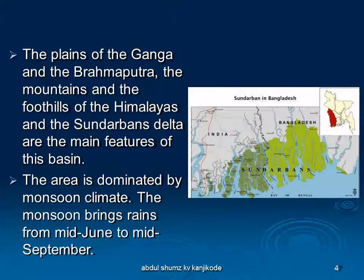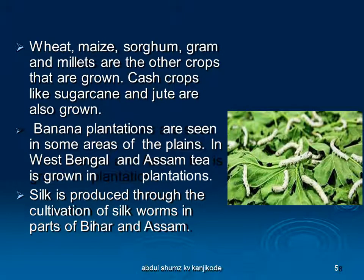The area is dominated by monsoon climate. The monsoon brings rain from mid-June to mid-September. Talking about the topography, the mountain areas have steep slopes and are not suitable for growing crops or settlement. The plains, however, are densely populated because they are good for cultivation — there is fertile soil and it is easy to develop crop habitation. Agriculture is the main occupation of the people here because of the flat land available.